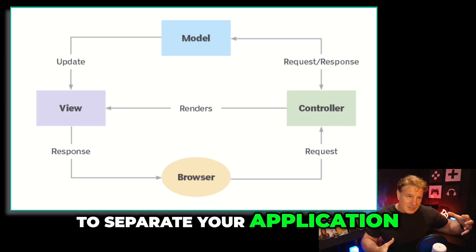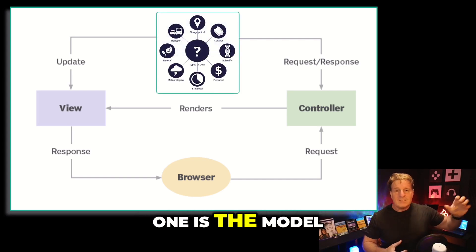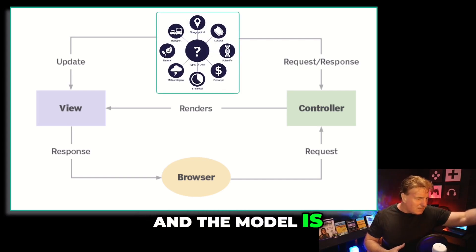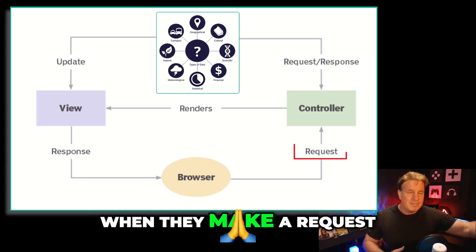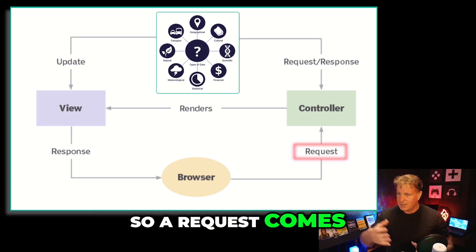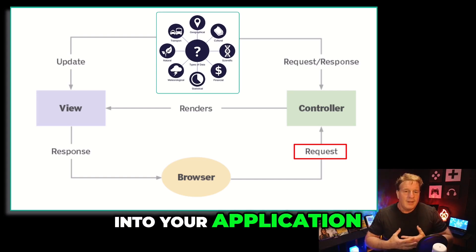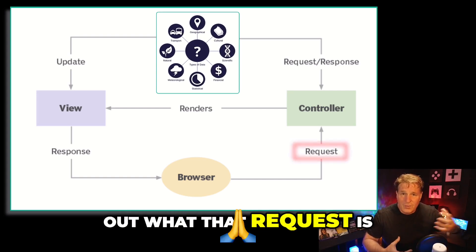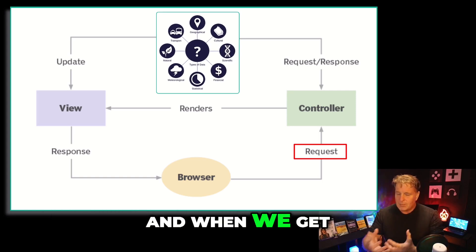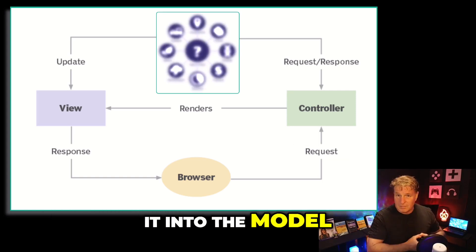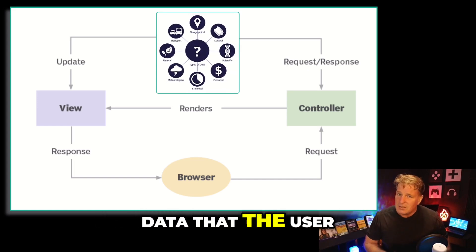The first domain is the model, and the model is just the data that your user is after when they make a request. A request comes into the server, into your application — we want to figure out what that request is, get information from a back-end system, and stuff it into the model. The model represents the data that the user is after on a given request-response cycle.